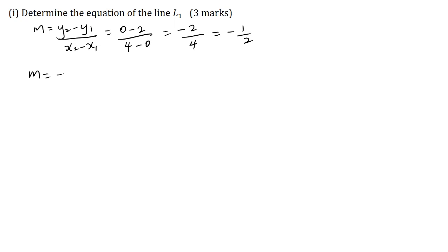So m is equal to minus a half, and from the graph we know that the y intercept is 2. The general equation of the straight line is y equals mx plus c. Substituting the values of m and c, y is equal to minus a half x plus 2.